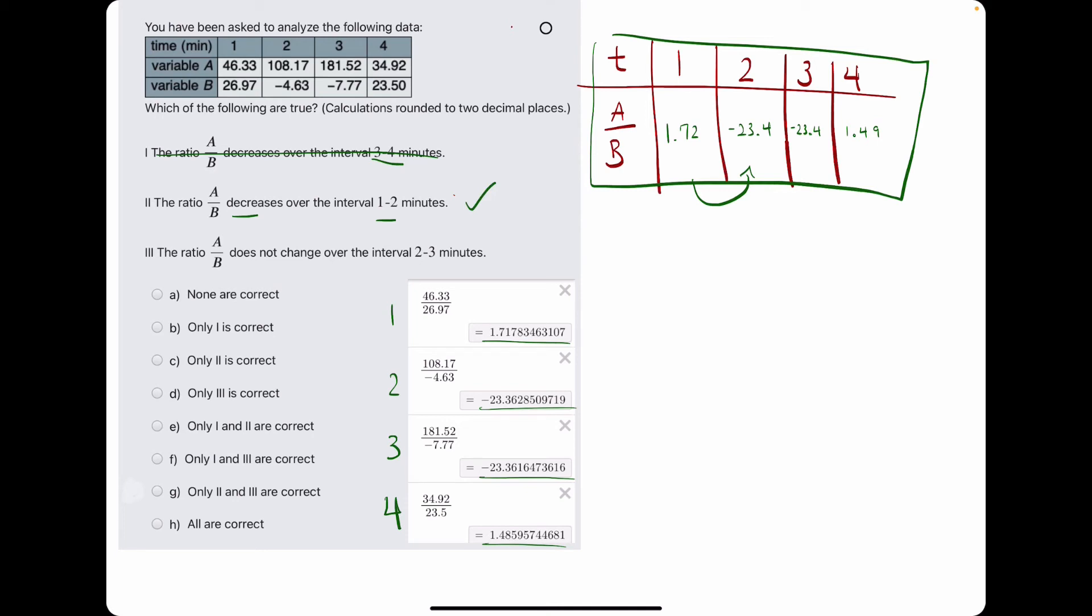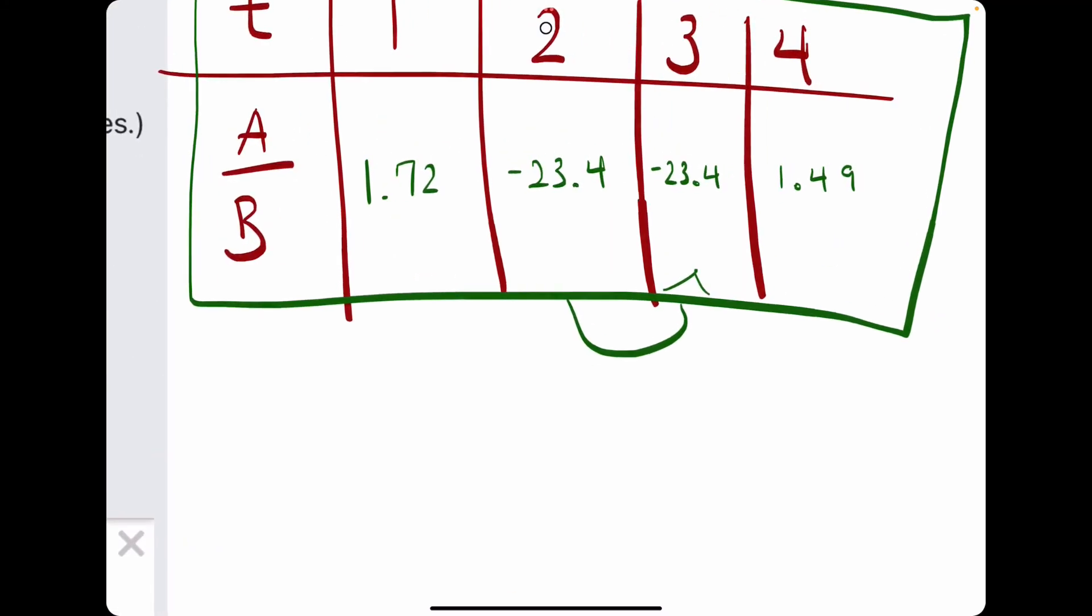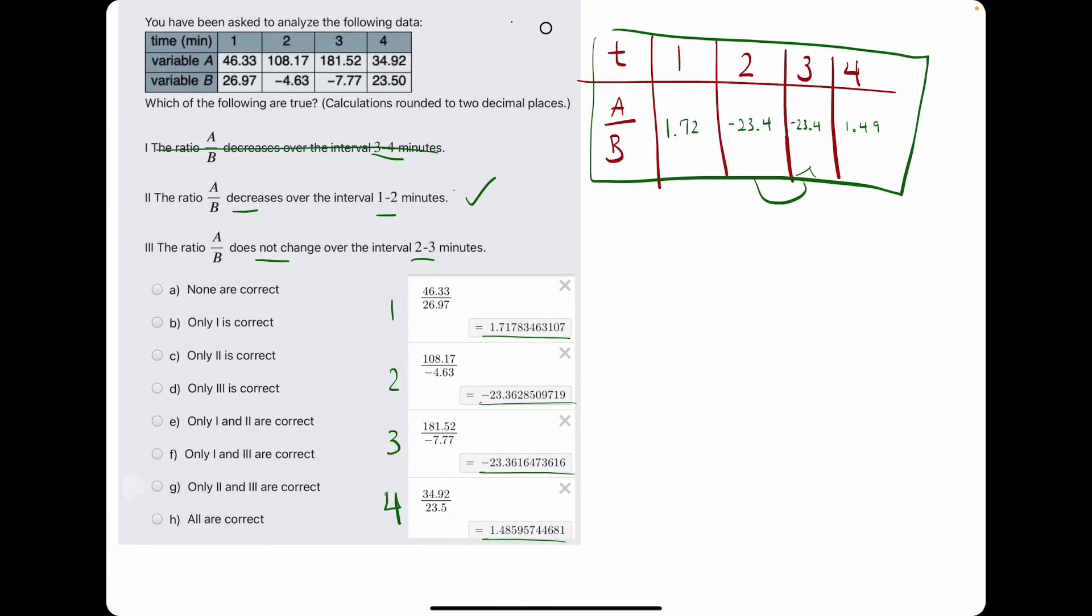Number 3, they say it does not change over the interval 2 to 3. So from 2 to 3, it goes from negative 23.4 to negative 23.4. So that is a true statement. It does not change over that interval.